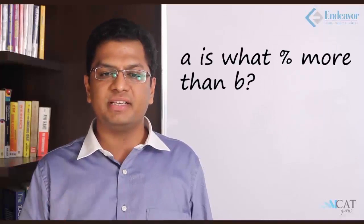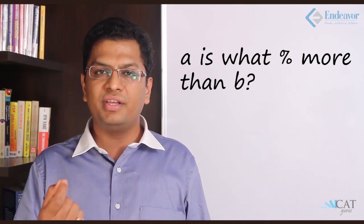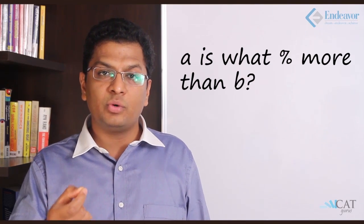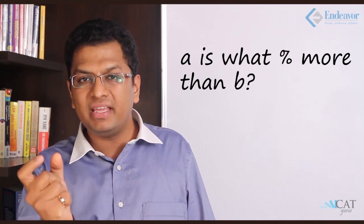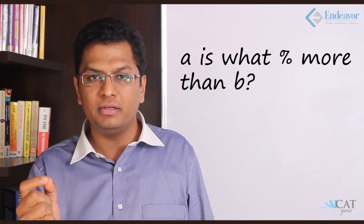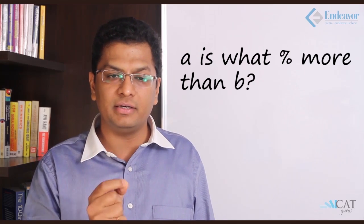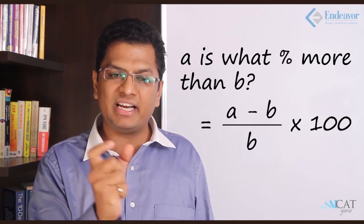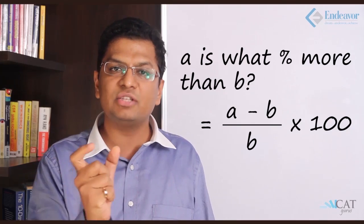A is what percentage more than B? How do we calculate, or rather what will be the base? We are comparing A to B. B has to be the base value because A has been compared to B. So B will form the denominator and how much more is the difference between A and B. So A minus B upon B into 100 will give us the result.